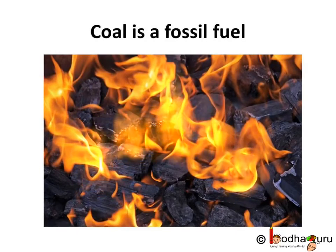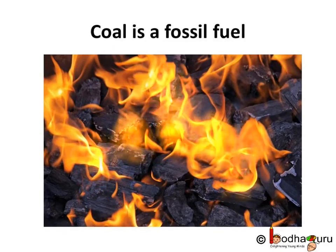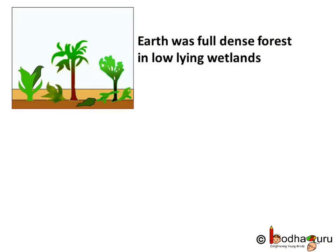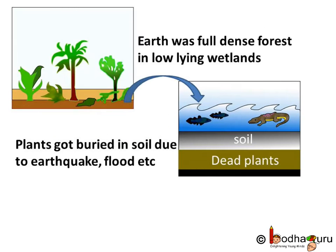First, let us learn about coal. Coal is a fossil fuel, as it is actually the remains of dead plants. So how was coal formed? About 300 million years ago, Earth was full of dense forests in low-lying wetlands.